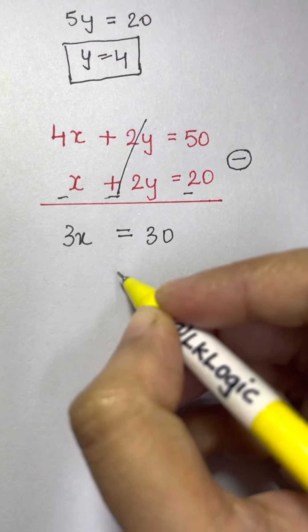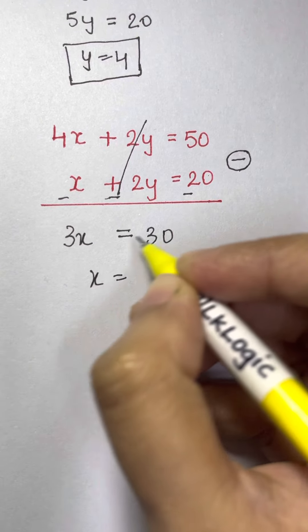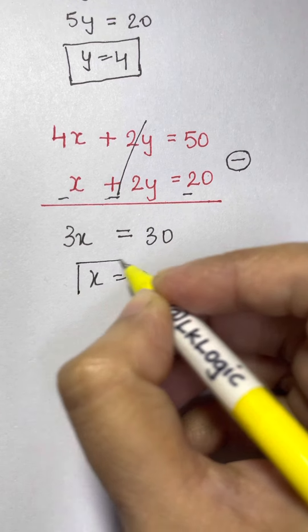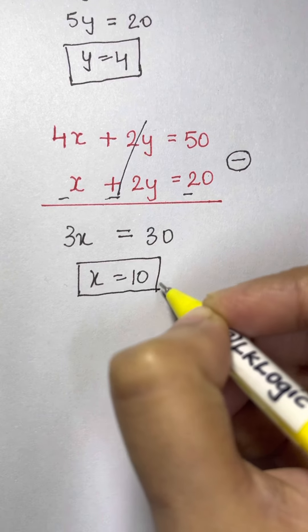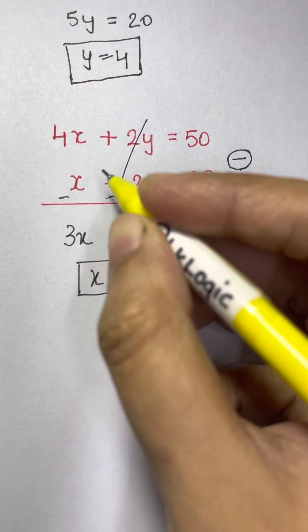So here we have x is equal to 30 divided by 3. That's equal to 10. Now let's substitute the x value in one of the equations.